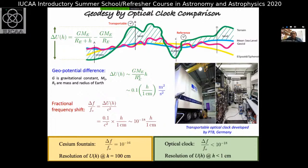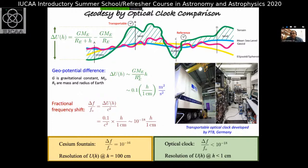Optical clock technology is very complicated and developed inside well-equipped laboratories, like this example from PTB Germany. To use such clocks on a hill for geodesy, you need to miniaturize everything — you cannot carry an entire laboratory. This is why there is major advancement in developing transportable optical clocks, also shown here from PTB Germany — developed on a truck that can go anywhere. Maybe in a few years drones could carry them. Transportable optical clock development is very important for these experiments.